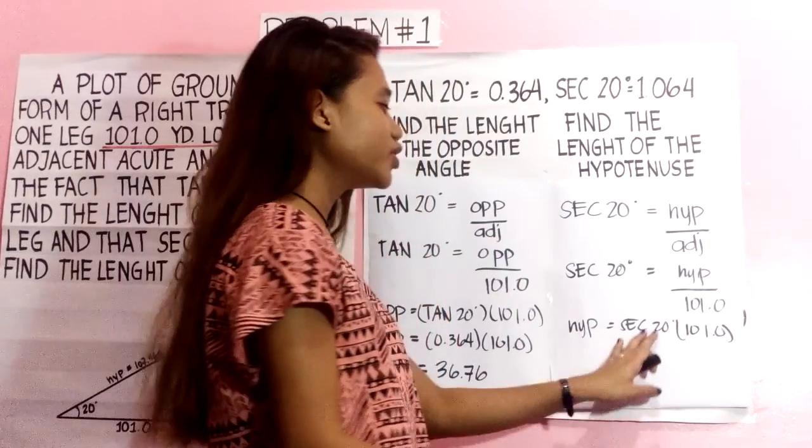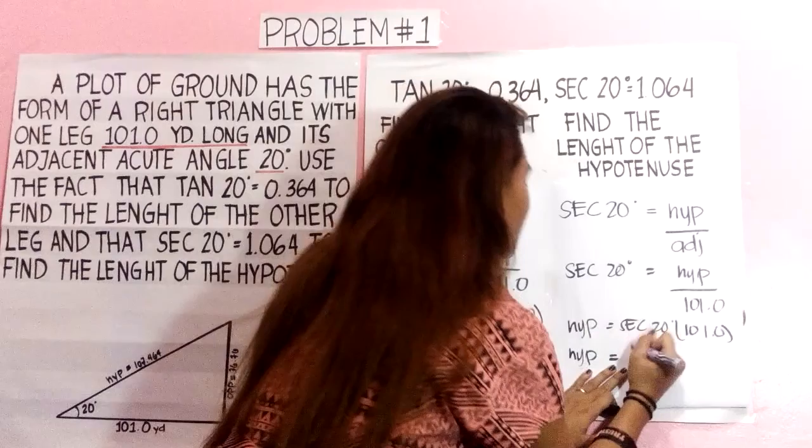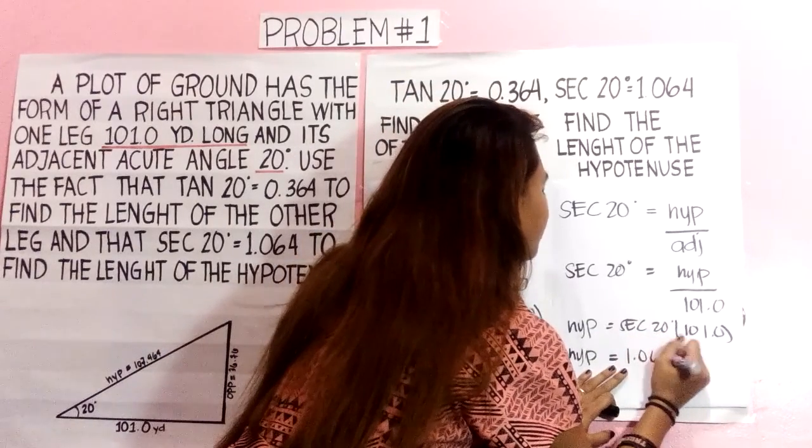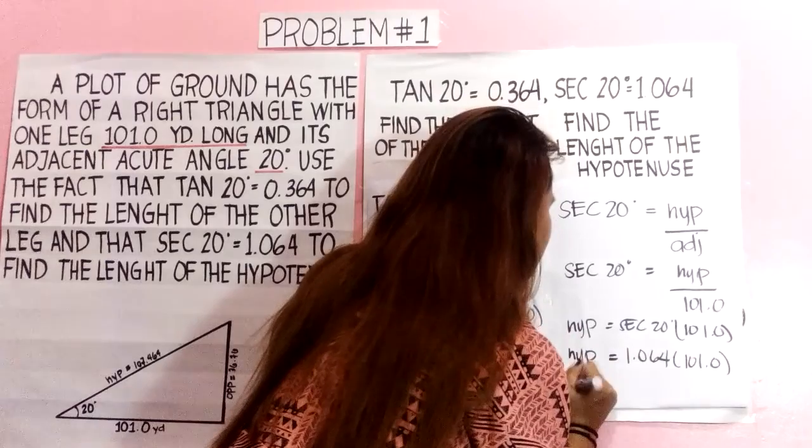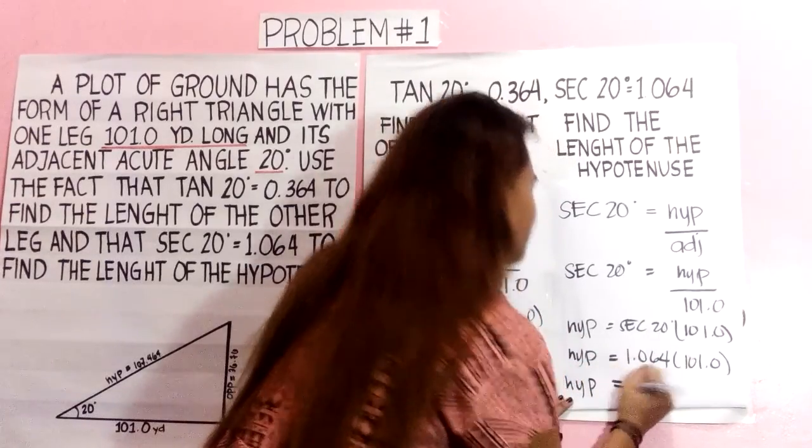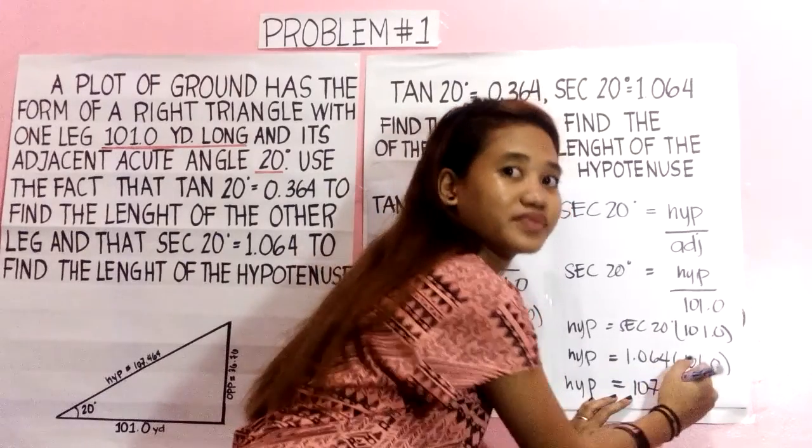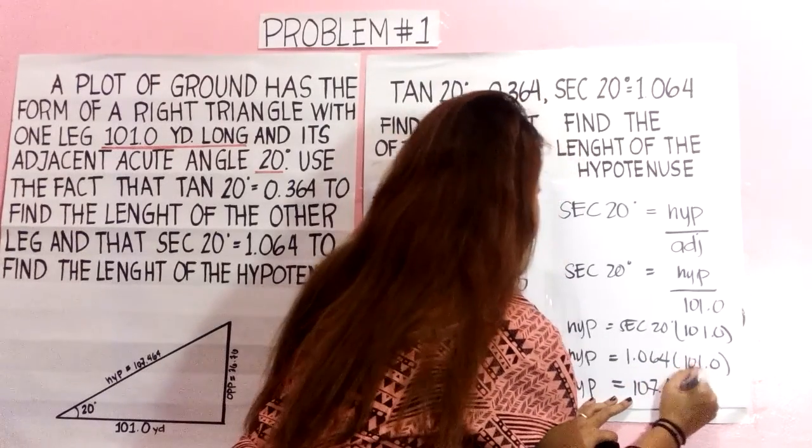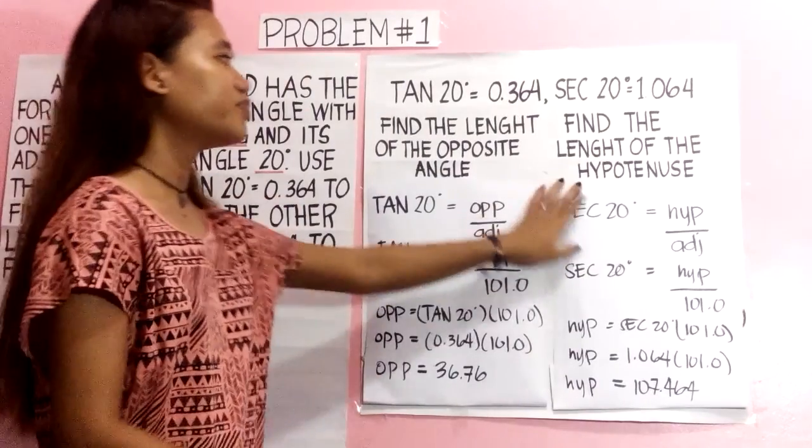We will substitute the value of sec 20 degrees, which is 1.064 times 101.0, which equals 107.464, the length of the hypotenuse.